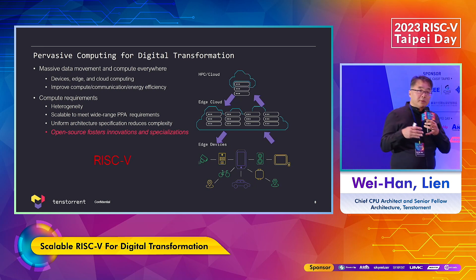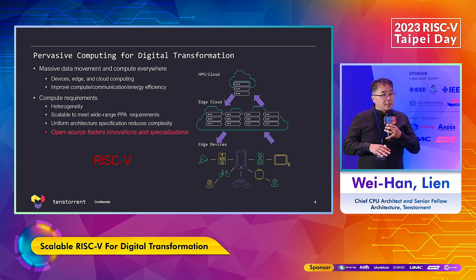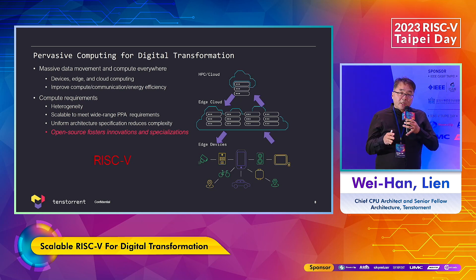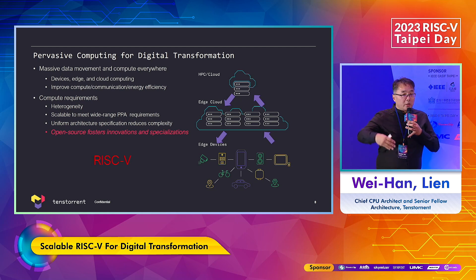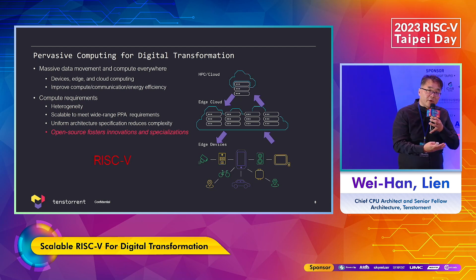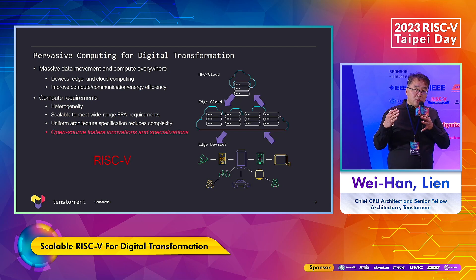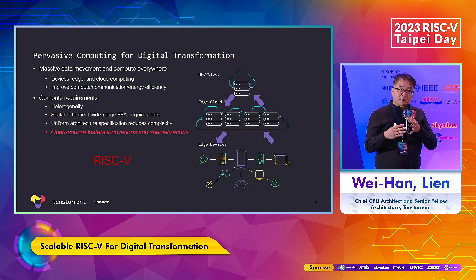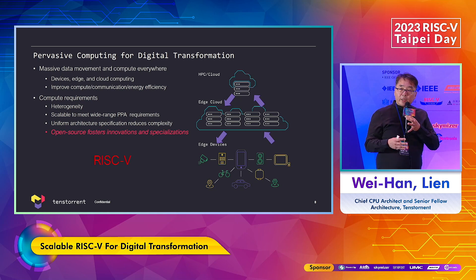We believe you cannot solve this problem by sending all the data to the data center — you have to solve it distributively, doing AI everywhere. So when defining this architecture, you want it to be scalable so it can be applied on the client side, the edge side, and all the way to the data center using one architecture, enabling a consistent software model. That's why RISC-V is important: it gives you standardization of ISA semantics, while extensions allow you to customize for the flexibility required to solve this AI-everywhere architecture problem.